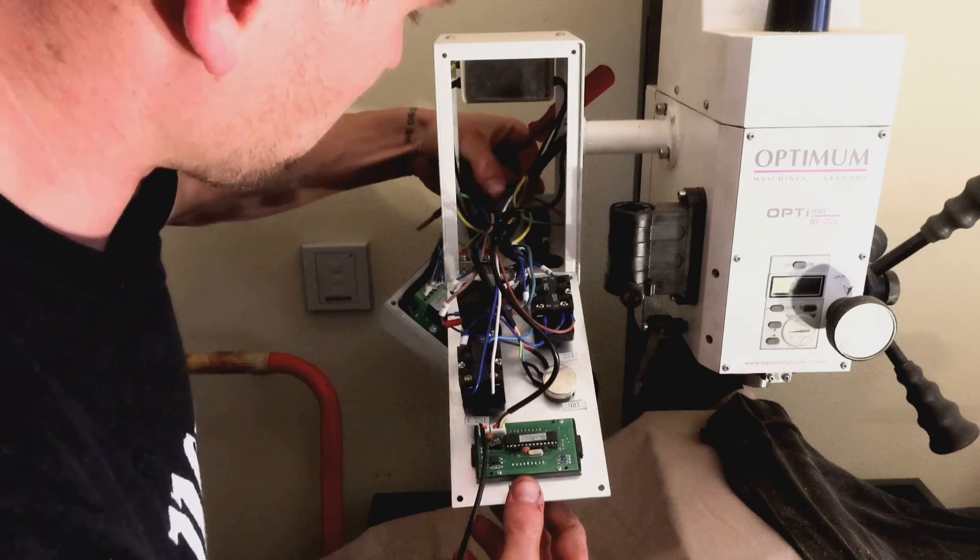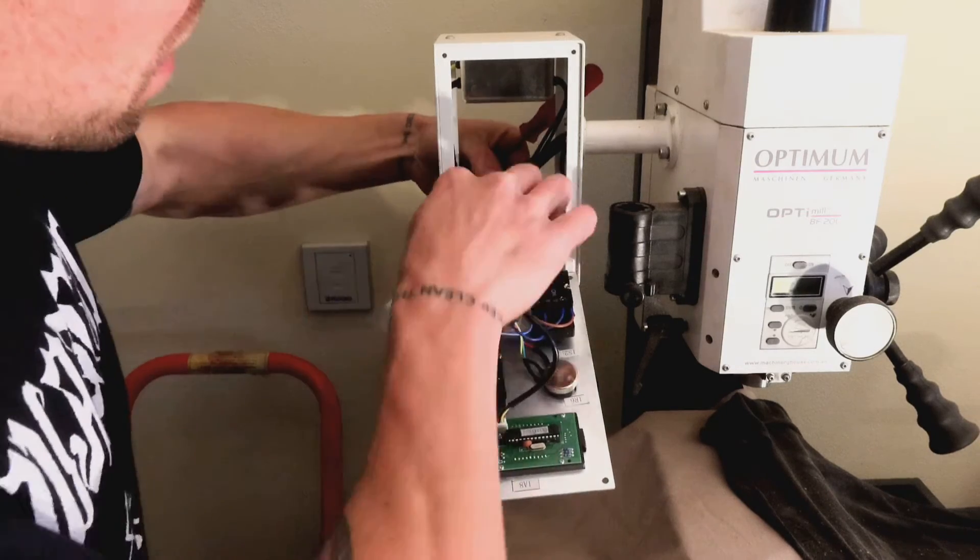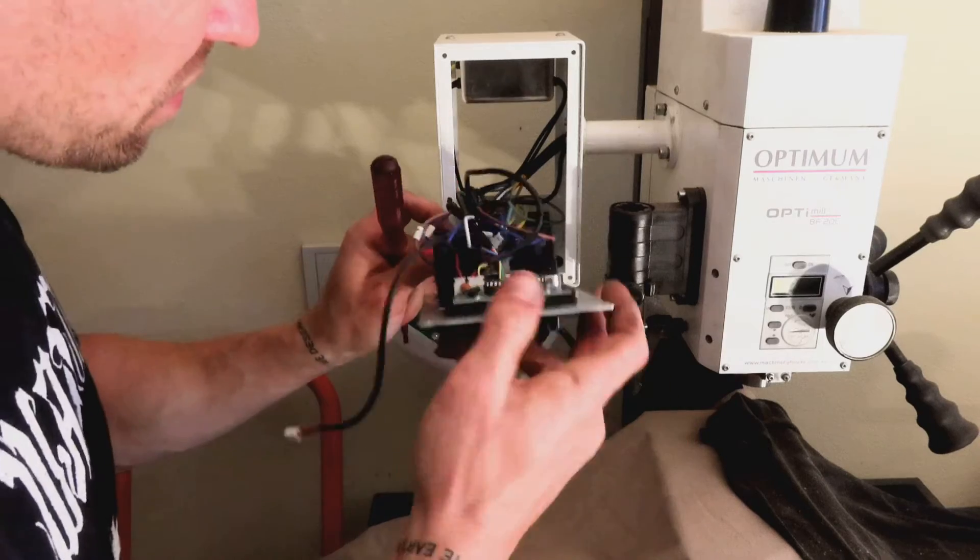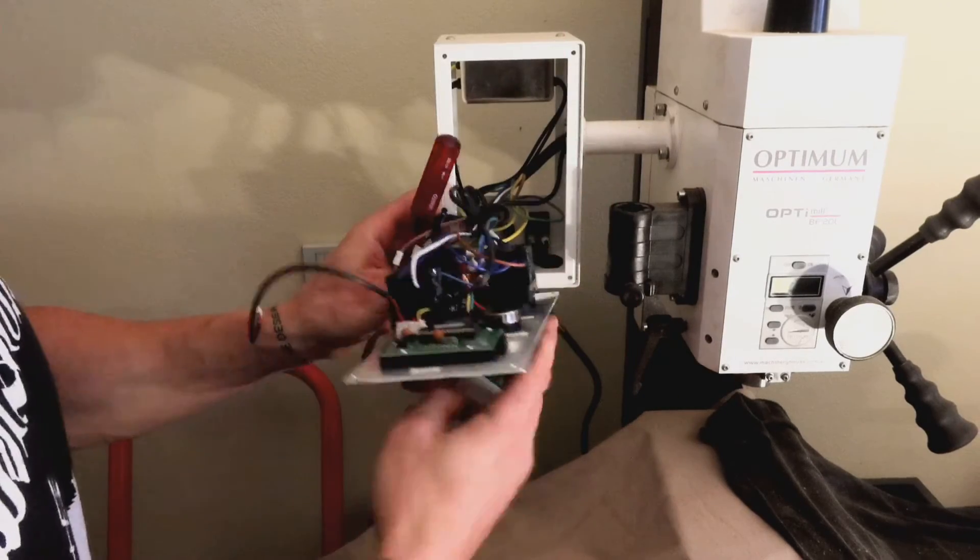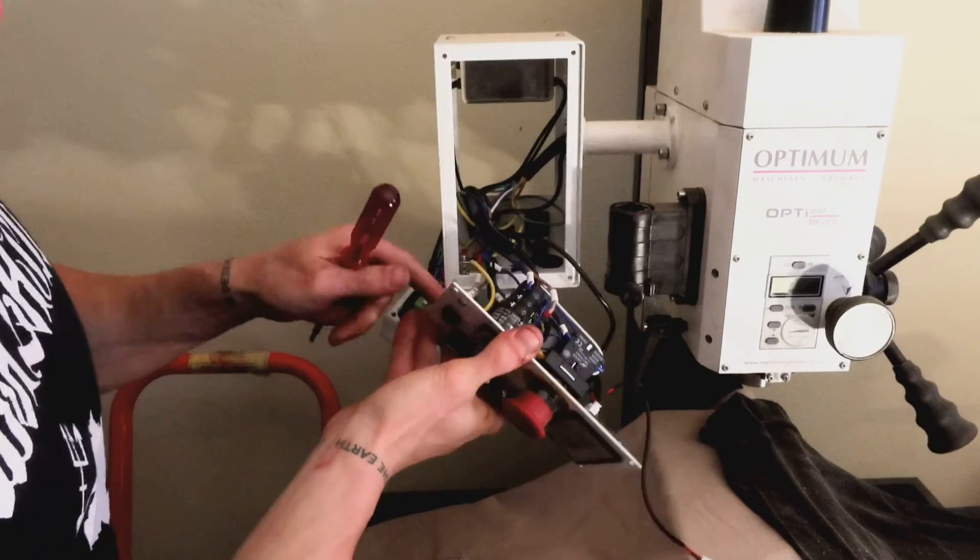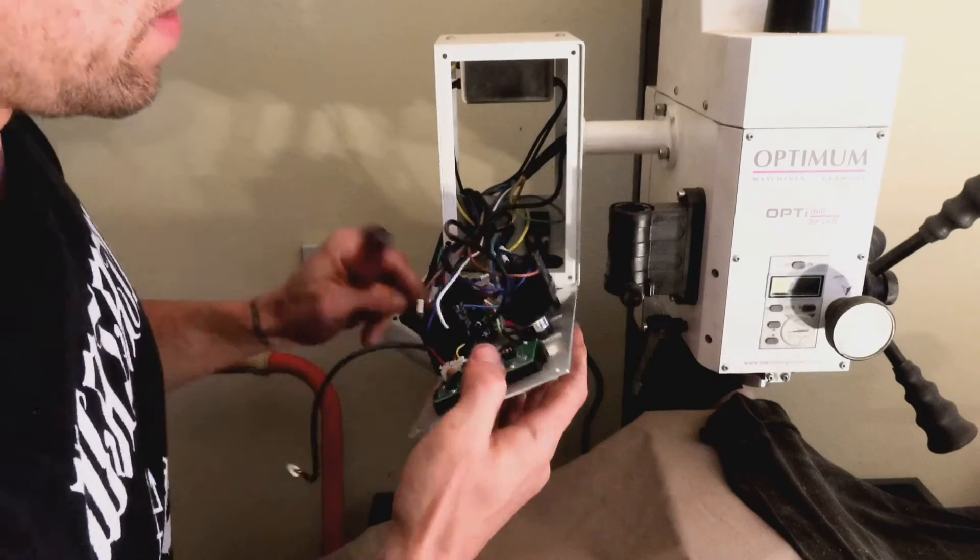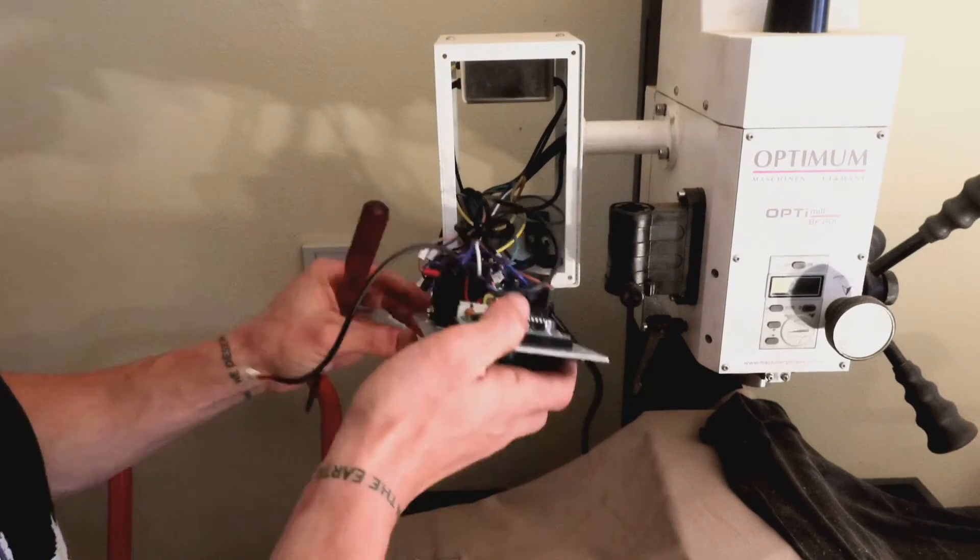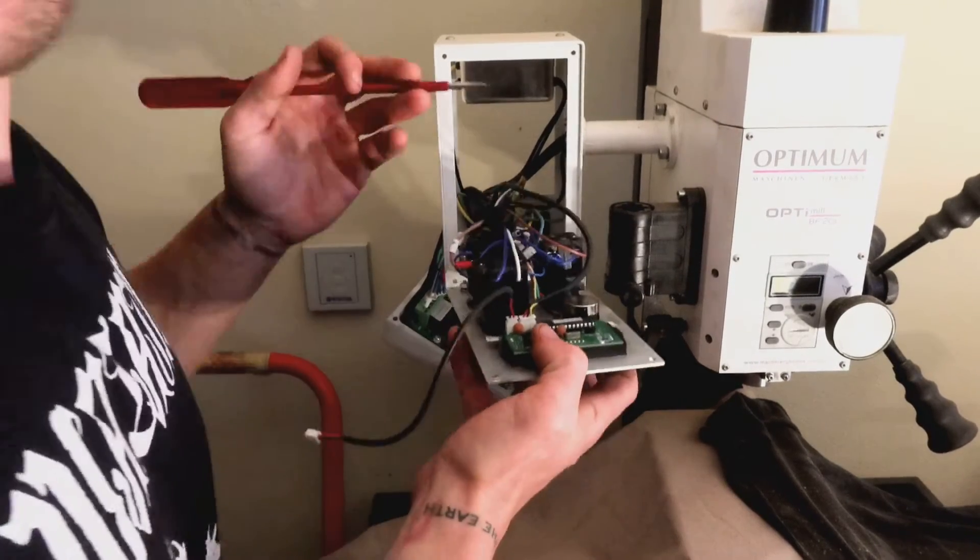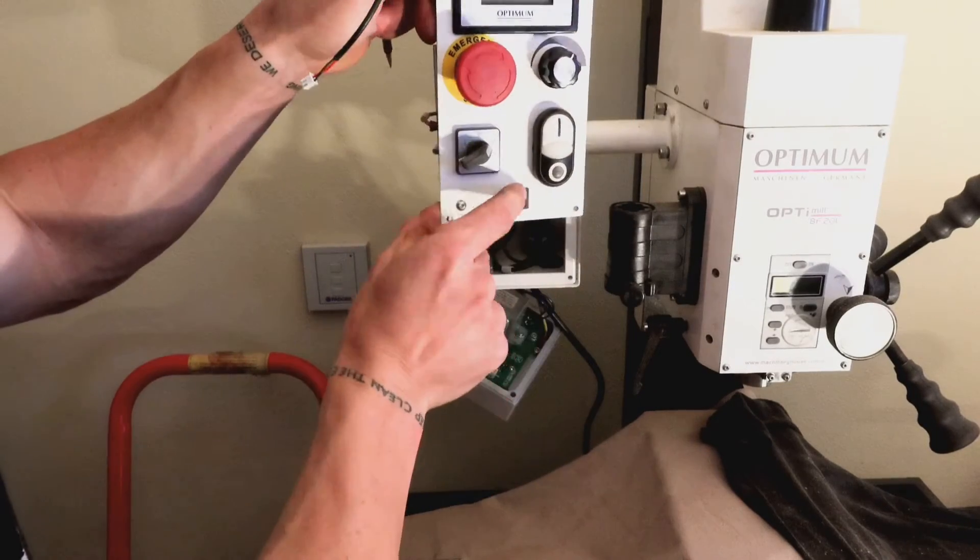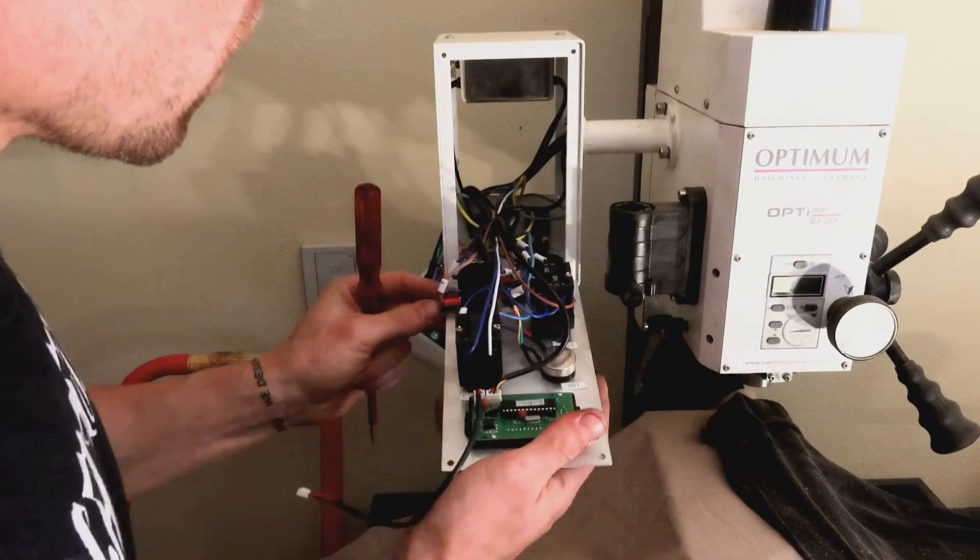Next up we'll do black from that six core. So black follows down also and black goes into one of the terminals for the light switch. The other one is red and here goes to the control board. So yeah, that black goes into, has a spade on the end, goes into one of the terminals on the switch for the light.